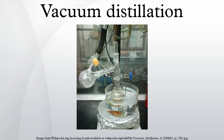Laboratory scale vacuum distillation is used when liquids to be distilled have high atmospheric boiling points, or chemically change at temperatures near their atmospheric boiling points. Temperature sensitive materials also require vacuum distillation to remove solvents from the mixture without damaging the product. Another reason vacuum distillation is used is that compared to steam distillation there is a lower level of residue build up.